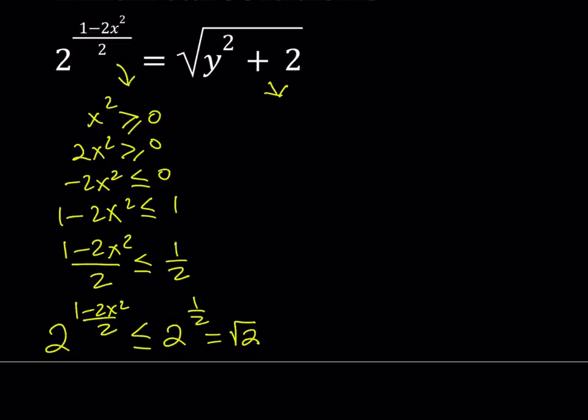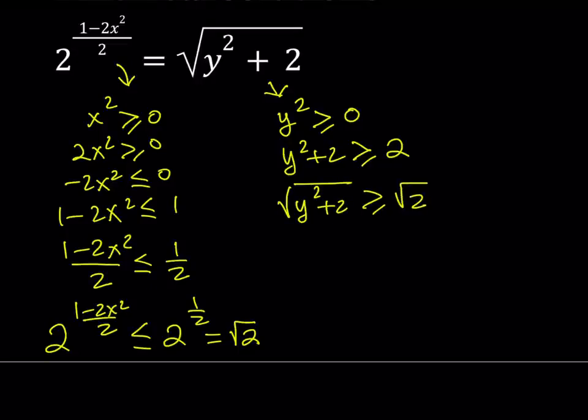Now, we have this non-negative quantity again. y squared is always greater than or equal to 0. So, when you add 2 to it, obviously, you're going to get something that is always greater than or equal to 2. And when you square root both sides, this is going to be true. Now, y squared plus 2 is a positive quantity all the time, not even non-negative. It's positive. It can't be 0. So, its square root is always defined. And it is greater than or equal to square root of 2.